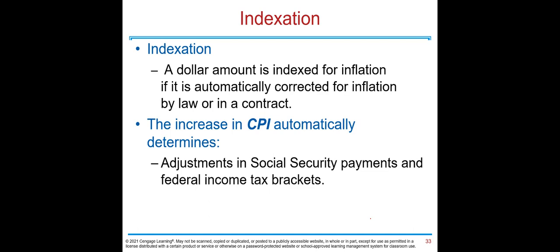Now let's talk about indexation. Inflation may distort values, so to protect against this distortion we use indexation. A dollar amount is indexed for inflation if it is automatically corrected for inflation by law or contract. For example, the increase in CPI automatically determines adjustments in Social Security payments and federal income tax brackets. If inflation increases by two percent, Social Security payments also increase by two percent — the goal is to keep the purchasing power of recipients secure and stable.